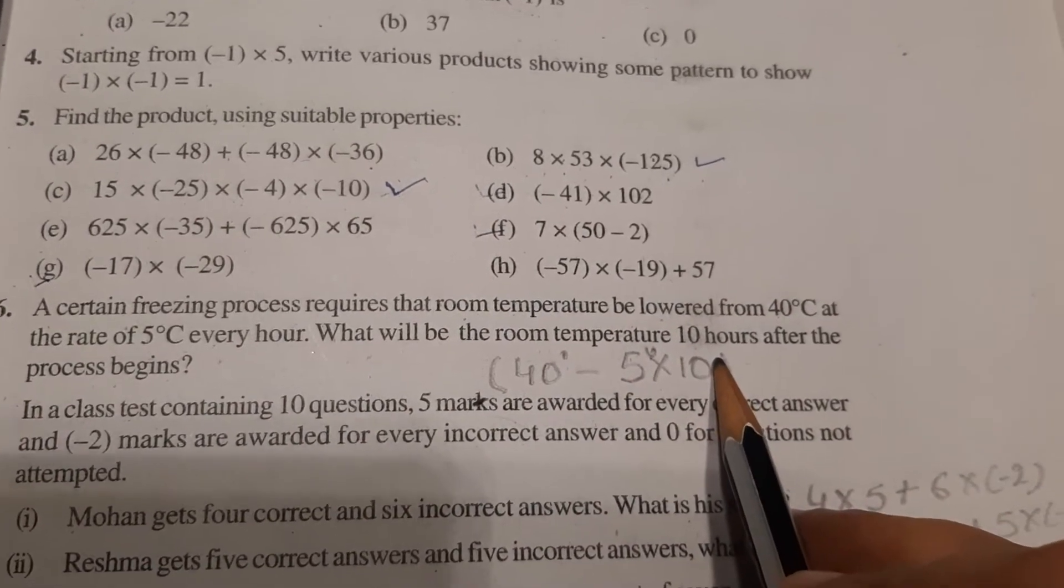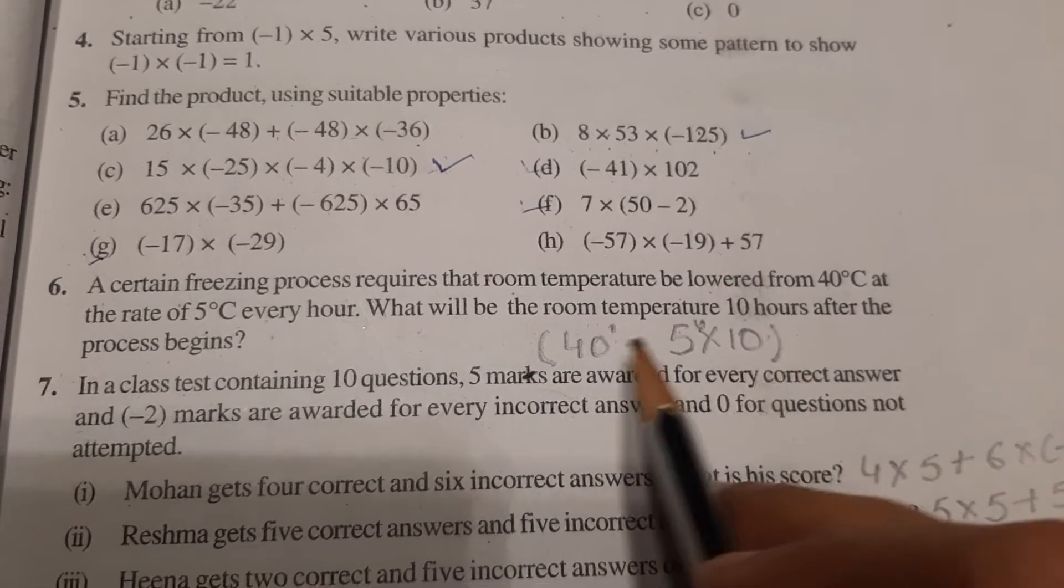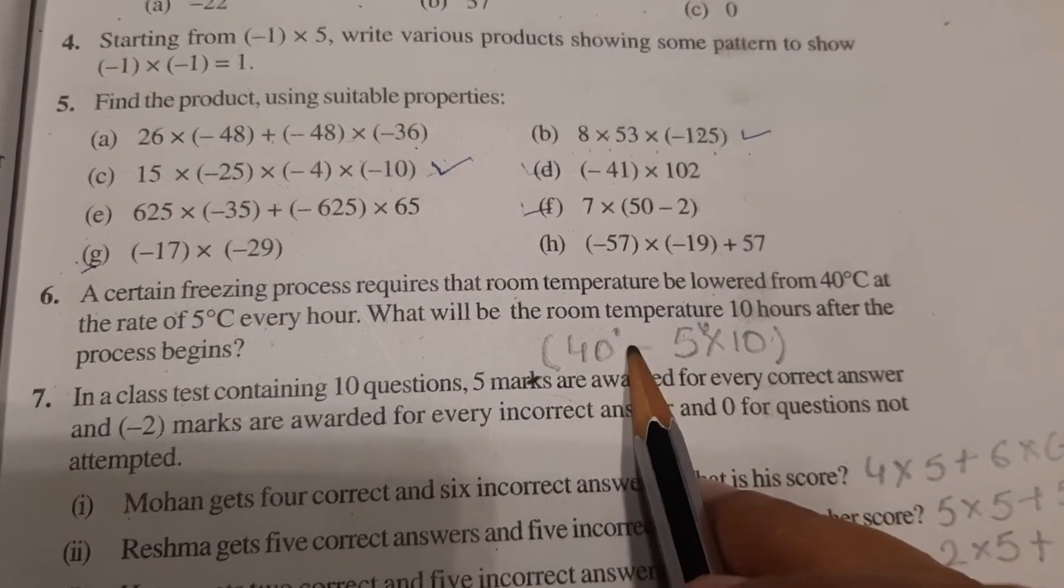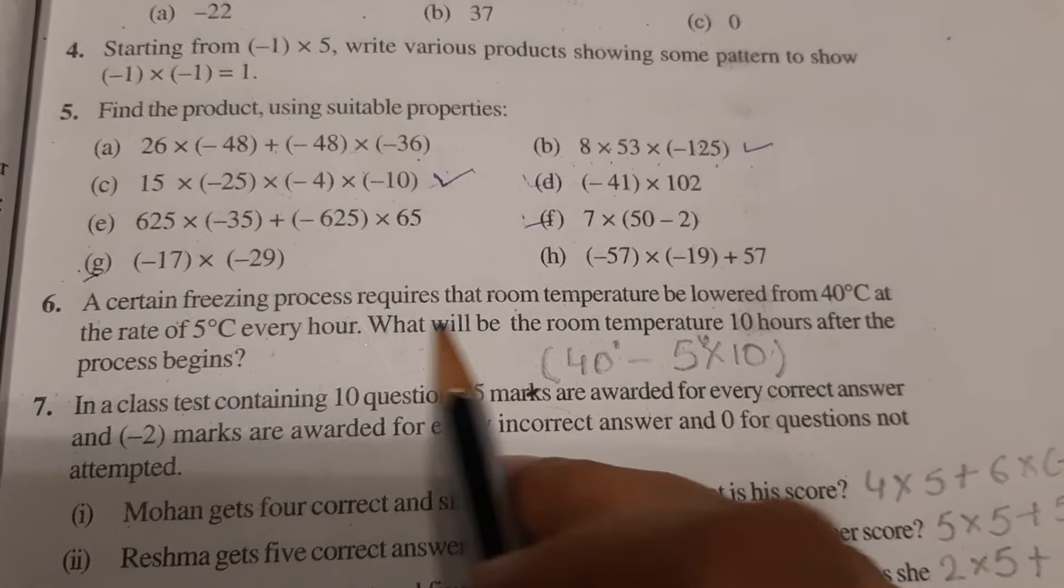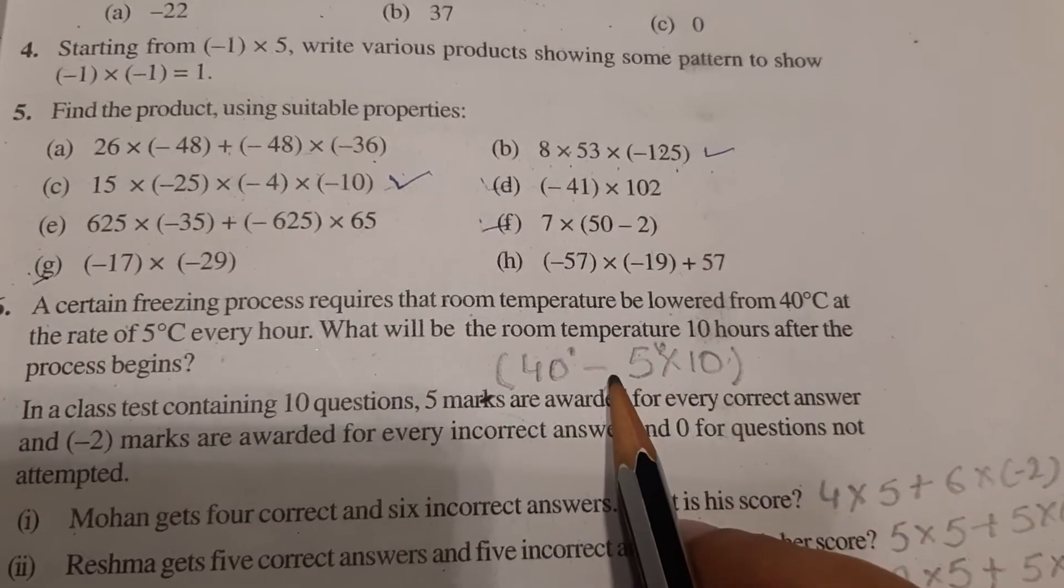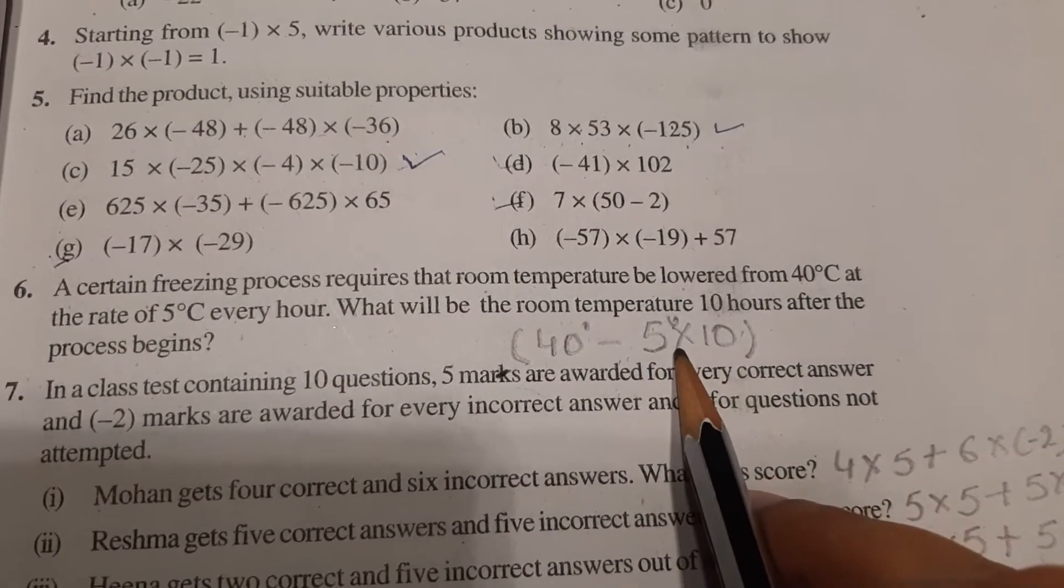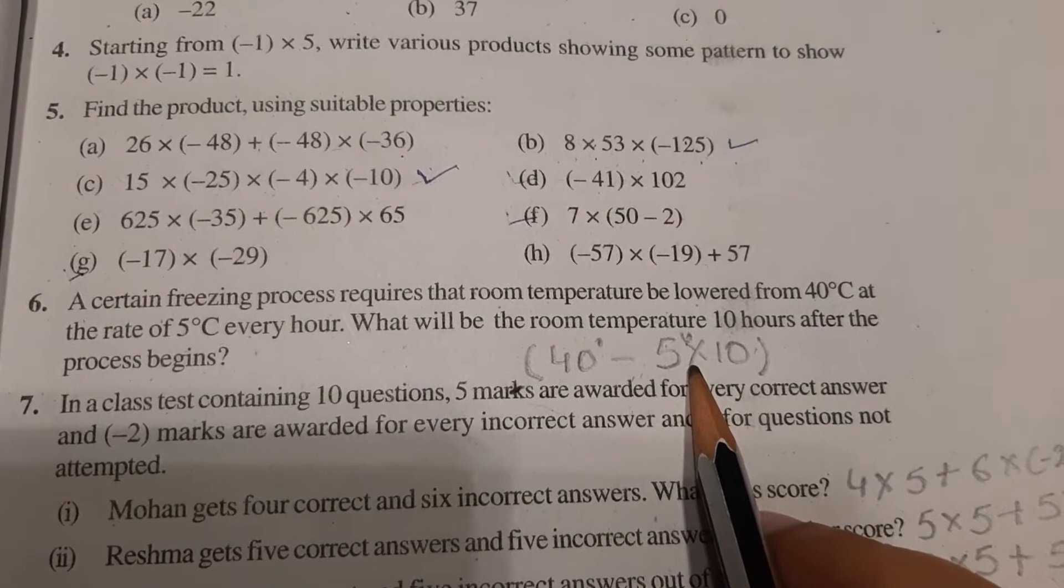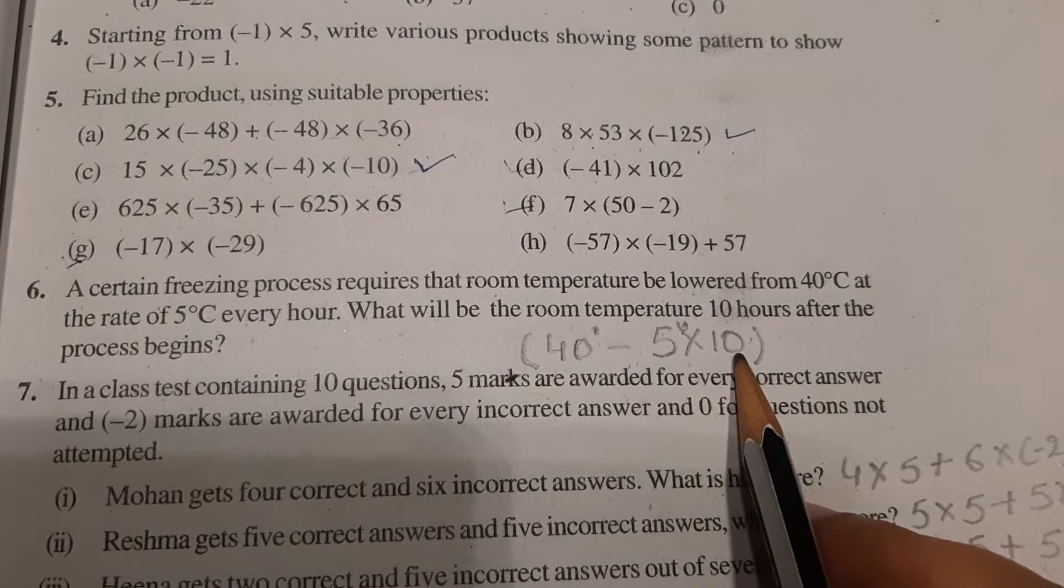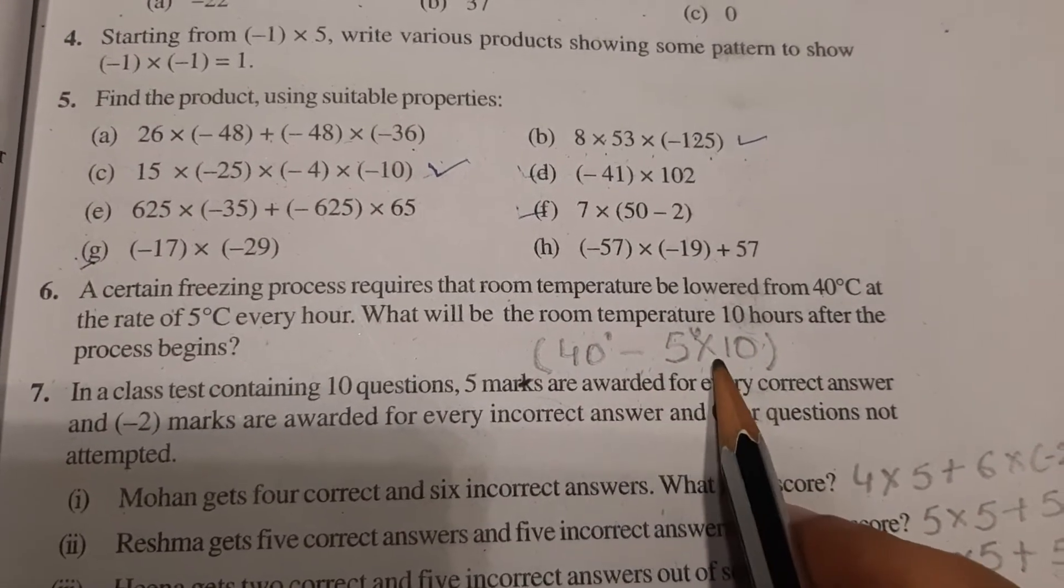So how will the equation be formed? This is the beginning temperature. Now we will subtract because temperature is being lowered. How much will we subtract? In 1 hour, 5 degree Celsius is lowered, so in 10 hours, 5 into 10. So here two operations are given: subtraction and multiplication. You know how to solve it by using BODMAS.